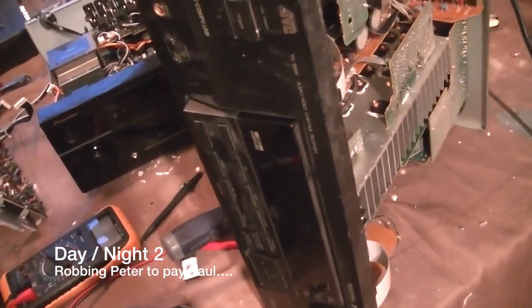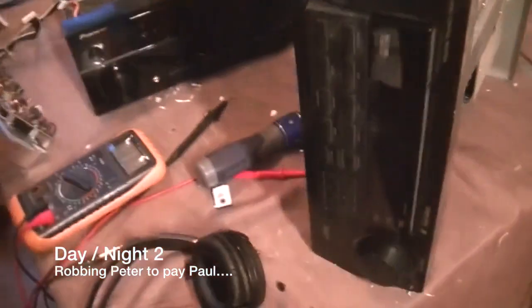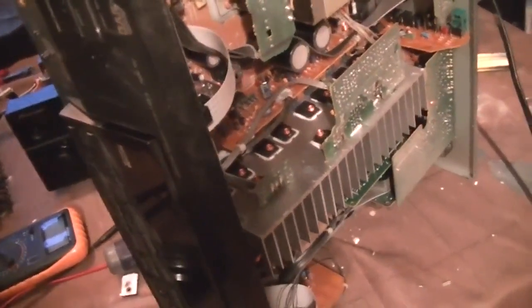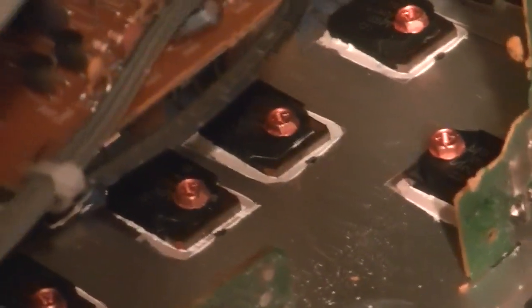So, I went ahead and tore apart another receiver that I had. And this one works perfectly fine. But I just don't really have much use for it unfortunately. So, I decided to look inside of it and see what kind of transistors it used. And it just so happened to have the exact same part number of transistors that I need to fix this Pioneer.